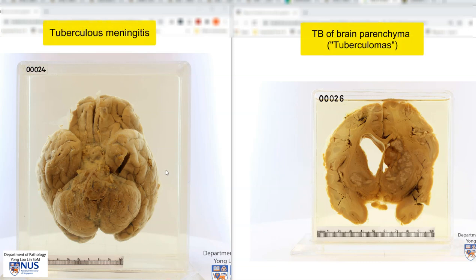In summary, we can see here two examples of how TB infection can affect the brain: in the form of exudates at the base of the brain with some discrete foci of caseous necrosis — tuberculous meningitis — and in the form of parenchymal lesions, which represent necrotizing granulomatous inflammation. Thank you.